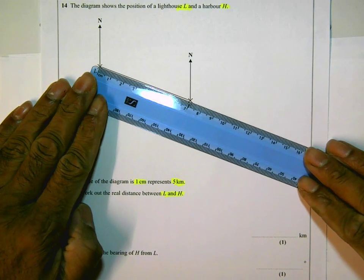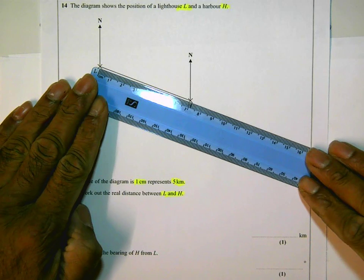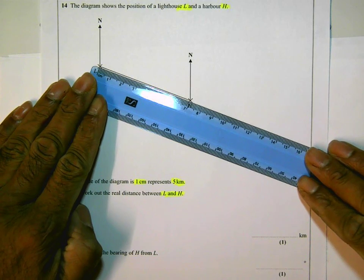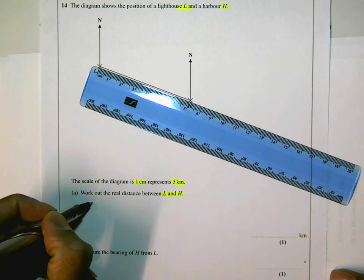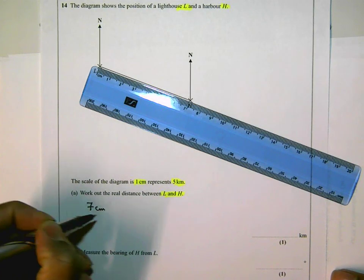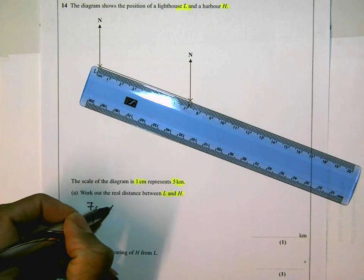And as you can see from there, it's pretty much bang on seven centimeters. So L to H is seven centimeters. But the question said to us that one centimeter is five kilometers.